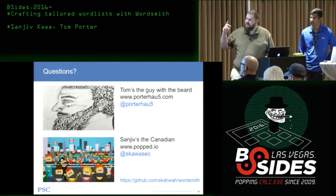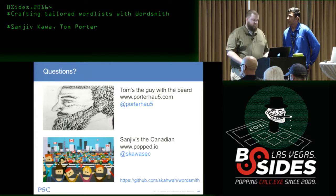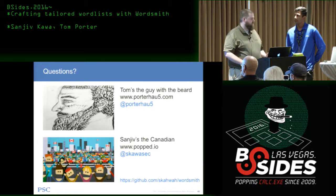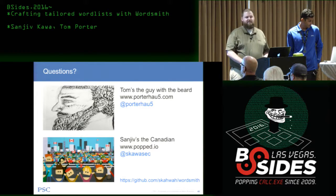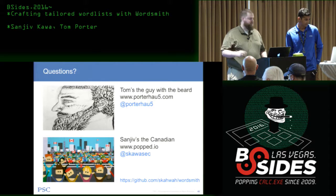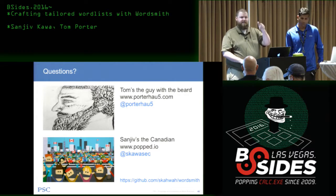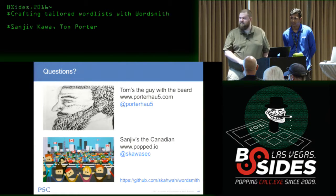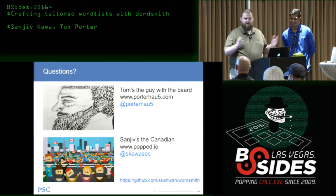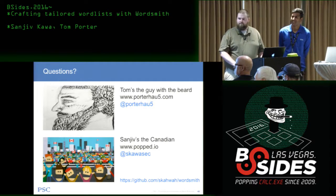Sanjiv and Tom are both believers in free and open source software and believe everyone should have access to all source code. If you have ideas for data or features, or experience querying APIs for geocentric data, they'd love to talk. Send a pull request, submit issues, or hit them up on Twitter. The repo is listed there. Thanks for coming out — floor is open to questions.